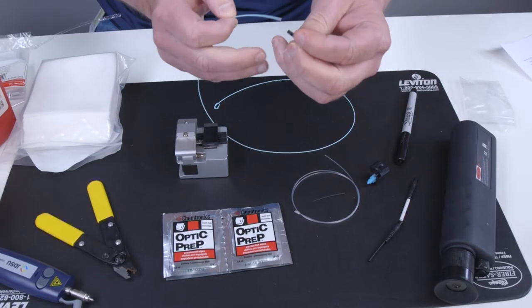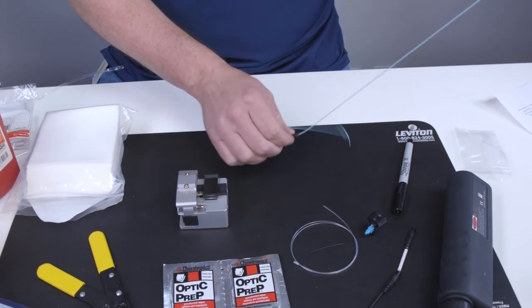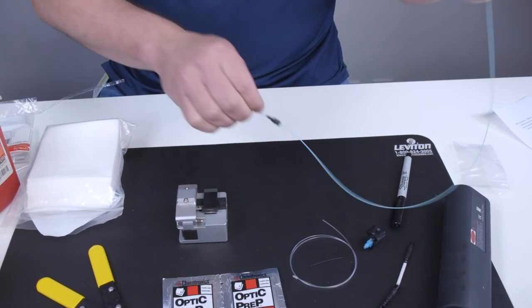Slide the boot over the fiber before you start the termination process. The cable should be inserted into the small end of the boot first.